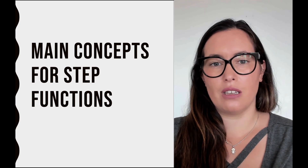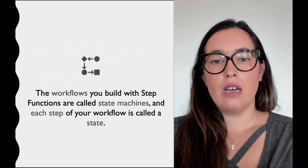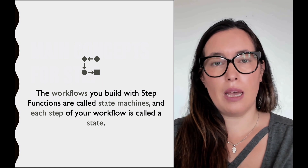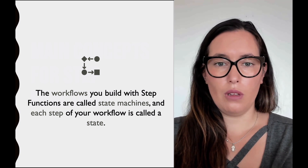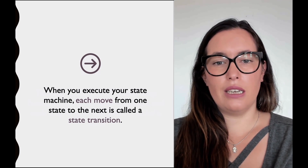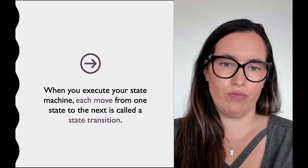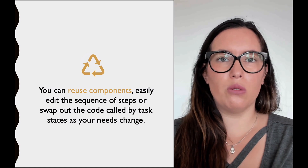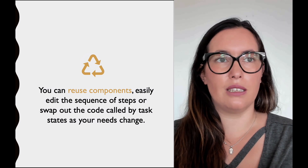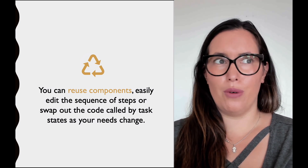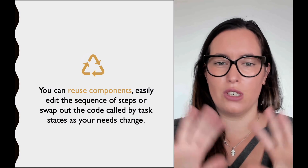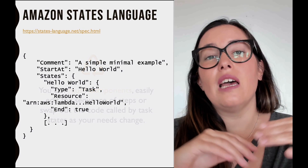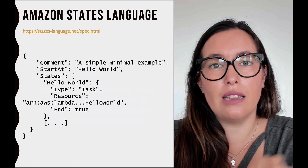Let's look at some of the main concepts for step functions. The first one: workflows are called state machines in step functions. Each step in that workflow is called a state, and when you execute a state machine and it moves from one state to another, that is called a state transition. The different things inside the states are called activities, and you can reuse them — a Lambda function can be part of one state and also belong to another step function, like making a puzzle.